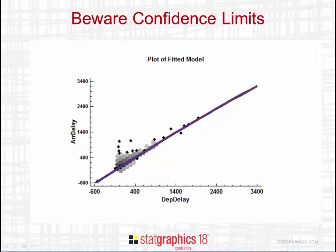First, and probably most important, is that we assumed that the relationship between arrival delay and departure delay was quadratic. That's a big assumption — if we've picked the wrong model, then obviously the confidence limits are not correct. Secondly, we've assumed that all the observations are normally and independently distributed around the curve with constant variance. Clearly, looking at the plot, that does not necessarily appear to be the case — it looks like there may be some skewness in the upper tail of the distribution. Also, it looks like there clearly could be some outliers.